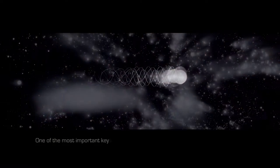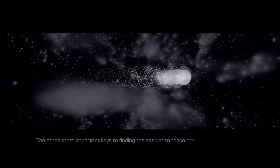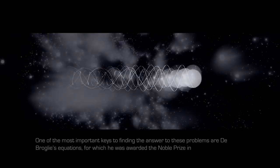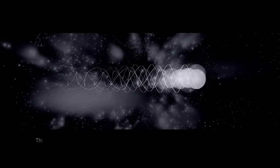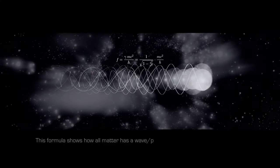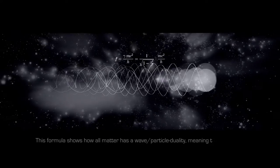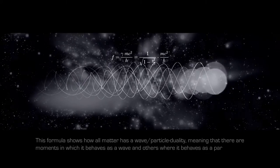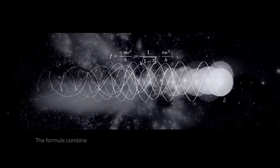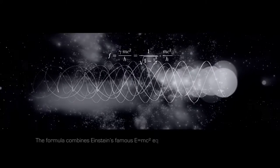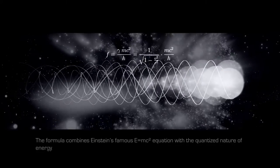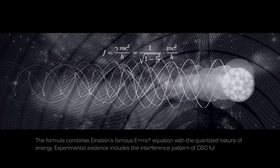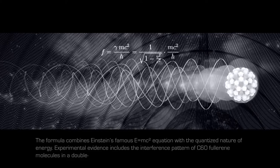One of the most important keys to finding the answer to these problems are de Broglie's equations, for which he was awarded the Nobel Prize in Physics. This formula shows how all matter has a wave-particle duality, meaning that there are moments in which it behaves as a wave, and others where it behaves as a particle. The formula combines Einstein's famous E=mc² equation with the quantized nature of energy. Experimental evidence includes the interference pattern of C60-Fullerene molecules in a double-slit experiment.